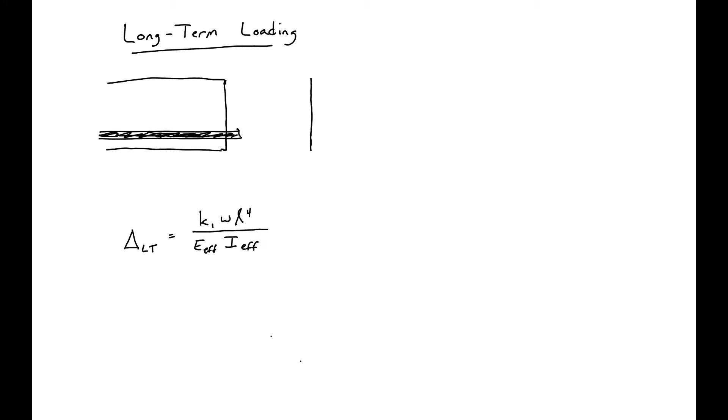The shrinkage strain will be restrained by the steel in the bottom. We'll have a larger shrinkage strain at the top than at the bottom of the section. This is due to the steel restraining shrinkage at a certain layer.